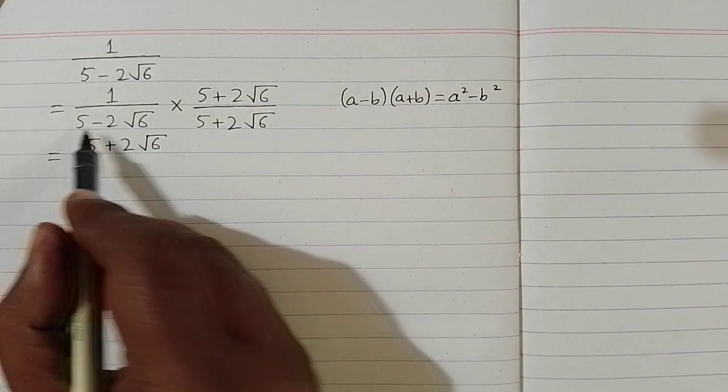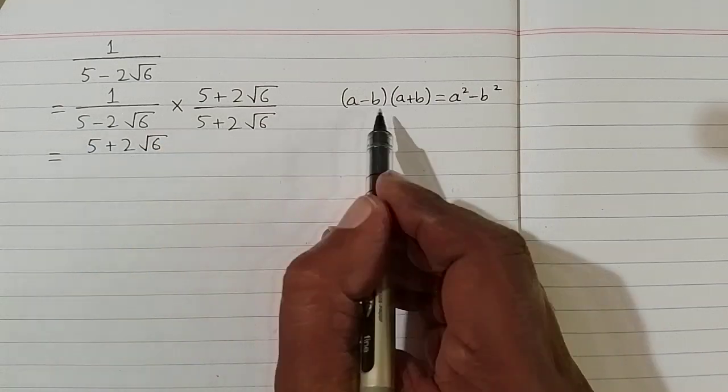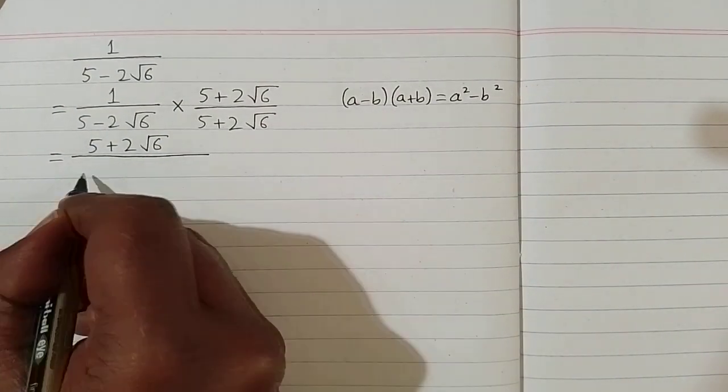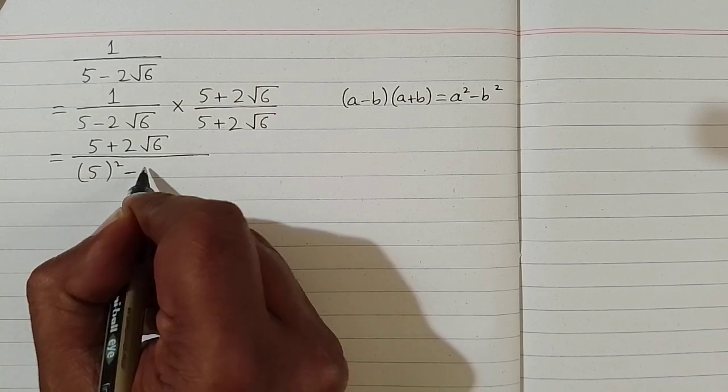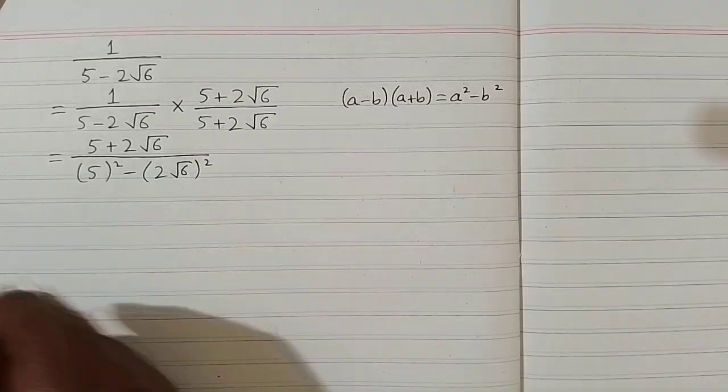So we have 5 in place of a and 2 square root of 6 in place of b. So we will write 5 square minus 2 times square root of 6 square.